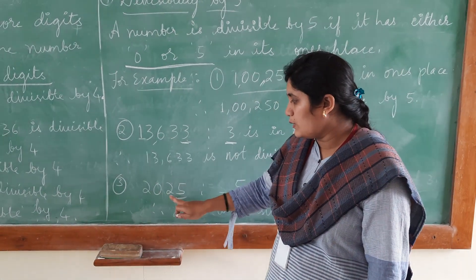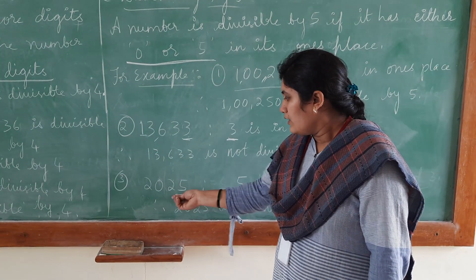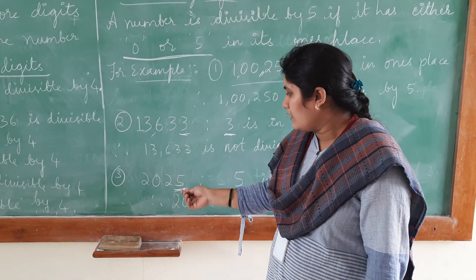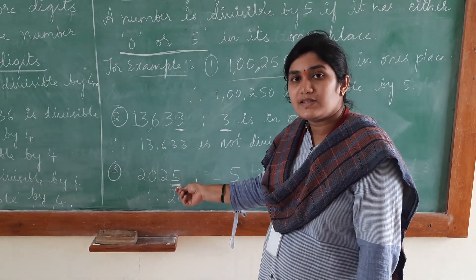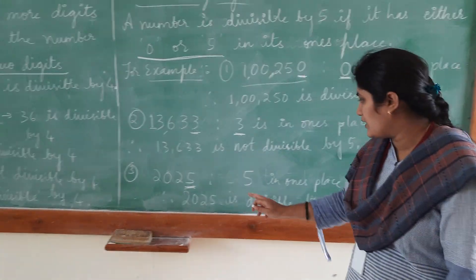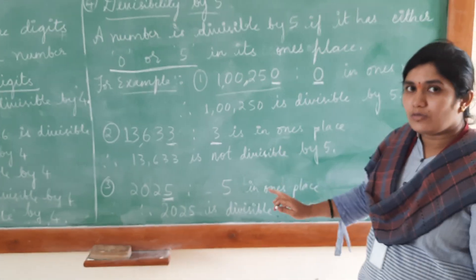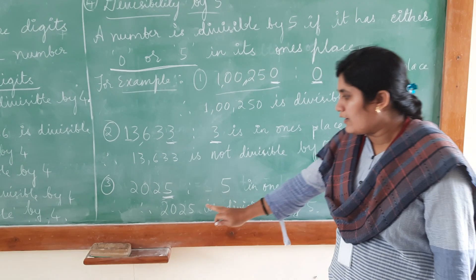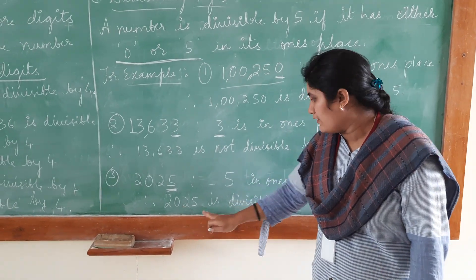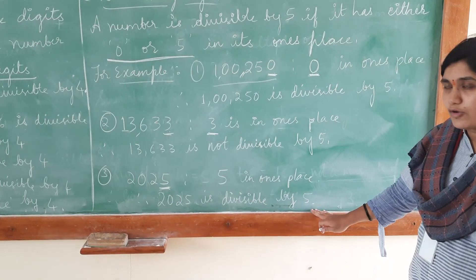The next example is 2,025. By observation we can see that 5 is in the ones place. According to the rule, either 0 or 5 should be in the ones place, and here we have 5. Therefore, 2,025 is divisible by 5.